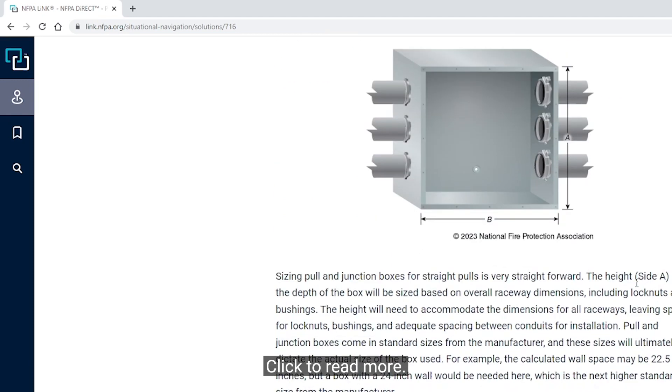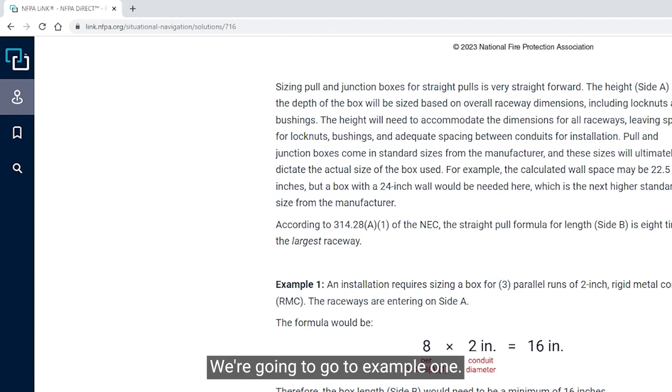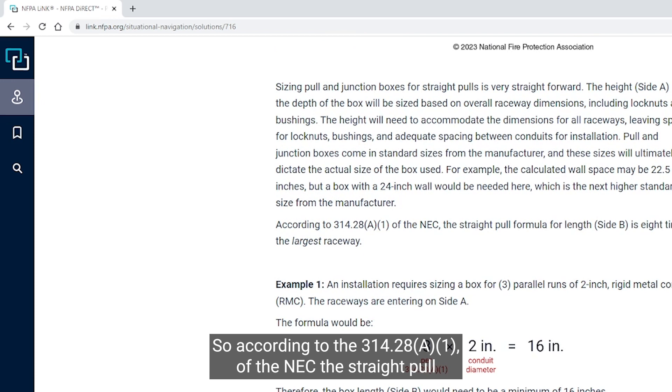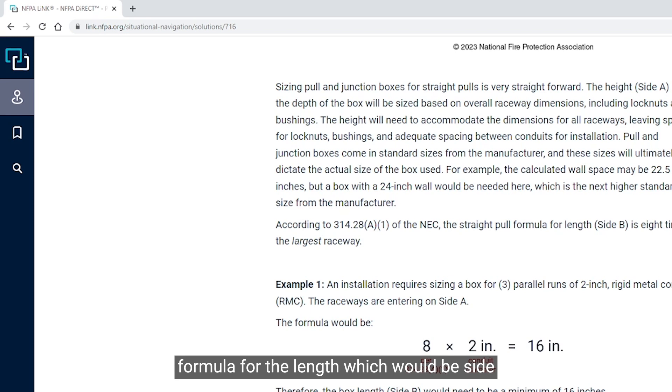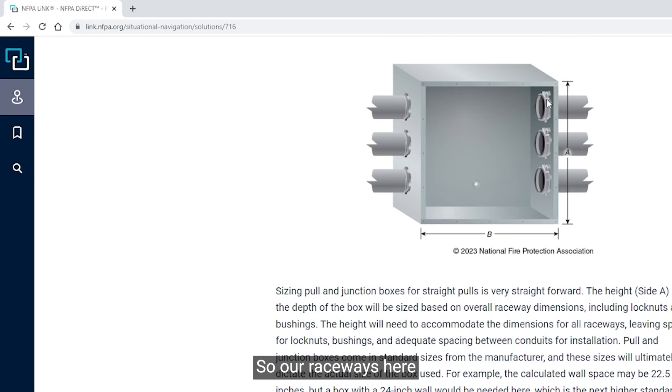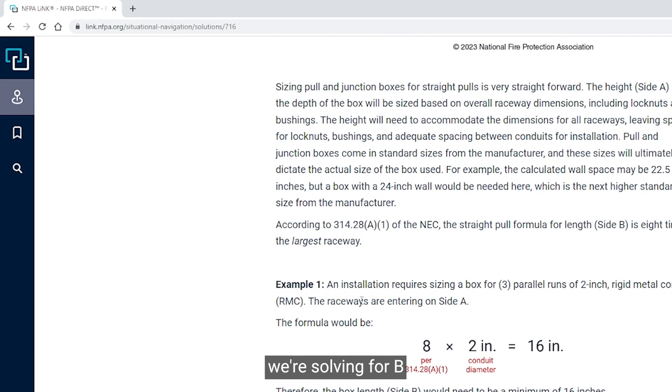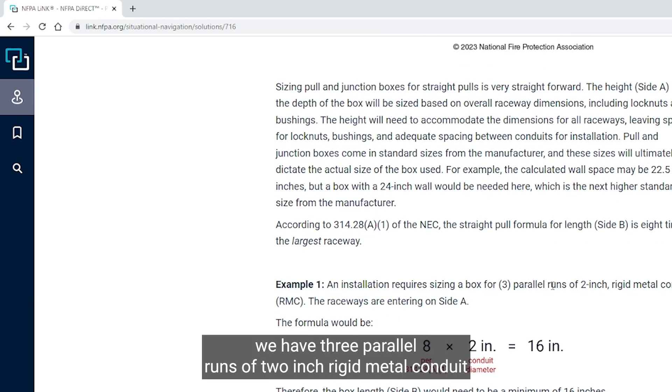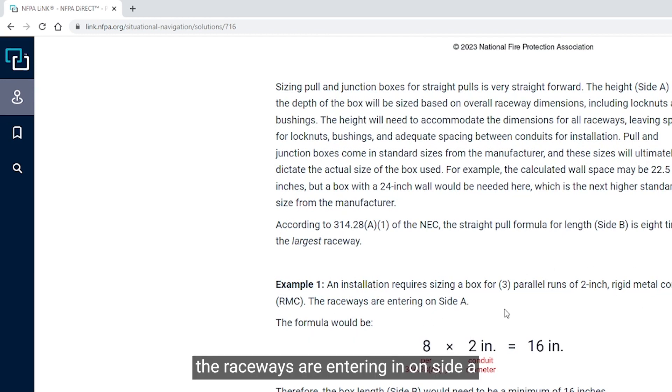For example, the calculated wall space may be 22.5 inches, but because it's not a standard size from the manufacturer, the box that's chosen is a 24-inch wall space. So we're going to go to Straight Pulls under .1 and click Read More. We're going to go to Example 1. According to 314.28(A)(1) of the NEC, the straight pull formula for length, which would be side B, is eight times the largest raceway.